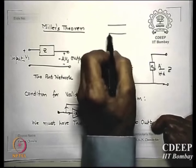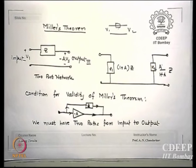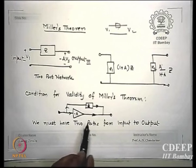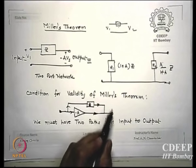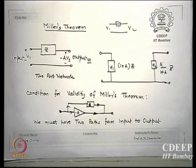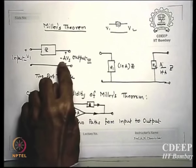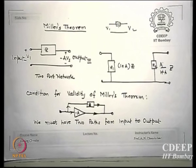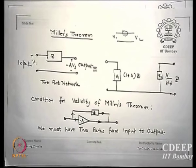The impedance at the input is gain times Z — since gain is large (10, 20, 100 times), this impedance becomes much larger at the input. The output-side equivalent Z2 = a/(a−1) × Z ≈ Z (approximately Z alone). The most important condition of Miller's theorem — which most books avoid — is: Miller's theorem is only valid if there are two paths from input to output. If there is no active device creating two paths, Miller's theorem is invalid. So do not split arbitrarily; only when you see two such paths is the split possible.